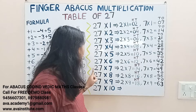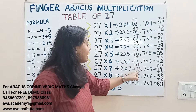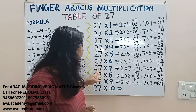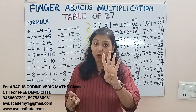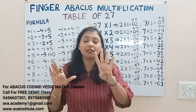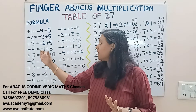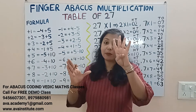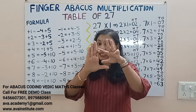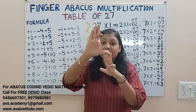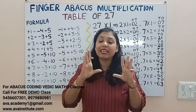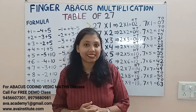27 sevens: 2 sevens are 14 — in hundreds 1, in tens 4. 7 sevens are 49 — in tens 40, in ones 9. To add 40: plus 40 formula is minus 10 plus 50. The answer is in hundreds 1, in tens 80, in ones 5, 6, 7, 8, 9 — 189 is the answer.